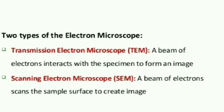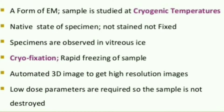Electron microscopy is usually of two types: TEM and SEM. TEM is Transmission Electron Microscopy, where a beam of electrons interacts with the specimen to form an image. SEM is Scanning Electron Microscopy, where a beam of electrons scans the sample to create an image.